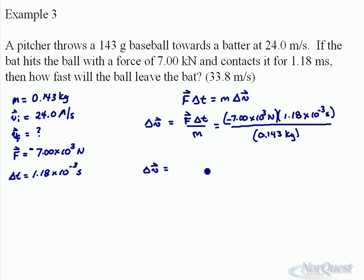So put in the negative 7, exponent 3 times 1.18 to the exponent negative 3 divided by 0.143, and you should get negative 57.76 meters per second.